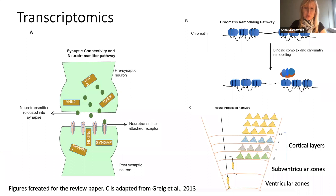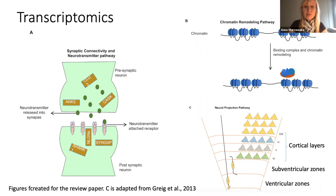As for the transcriptomic studies, gene expression measures play a key role in determining the functional consequences of genes and identifying genetic networks underlying a condition. Whole genome transcriptomic studies have identified several pathways on which different genes associated with autism seem to converge. Three pathways have been consistently reported: the synaptic connectivity and neurotransmitter pathway, chromatin remodeling, and neuronal projection pathways, as visualized on this slide.